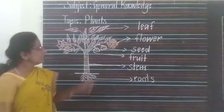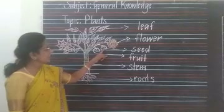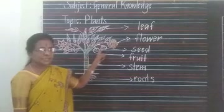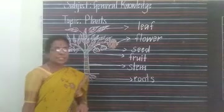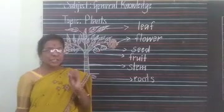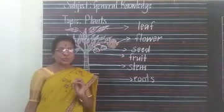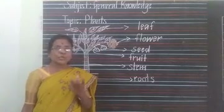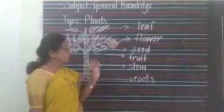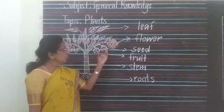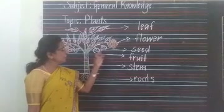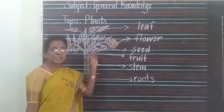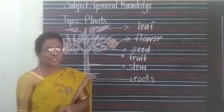Next, go to the seeds. These are seeds. Seeds sit inside the fruit. Seeds grow into new plants. Without seeds, plants cannot grow.